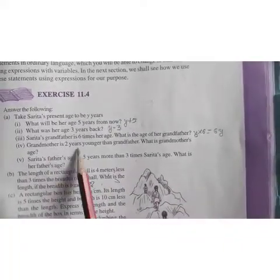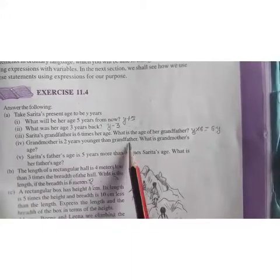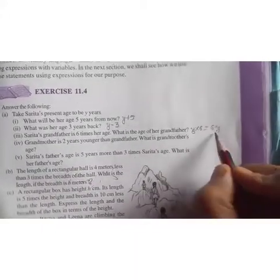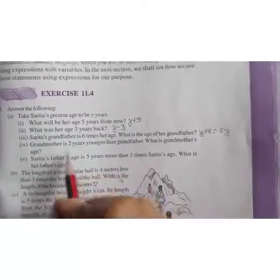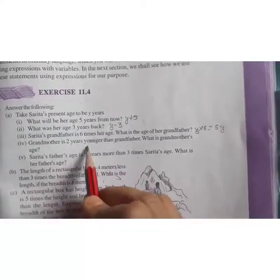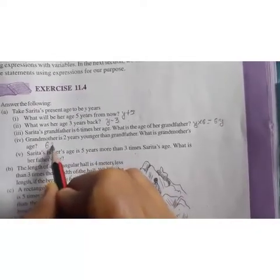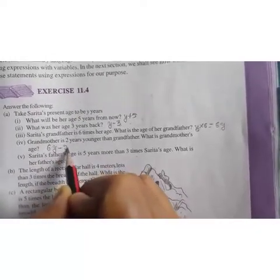Grandmother is 2 years younger than grandfather. What is grandmother's age? So grandfather's age you have already found, it is 6Y. And grandmother is 2 years younger, that is less. So you will write 6Y minus 2.